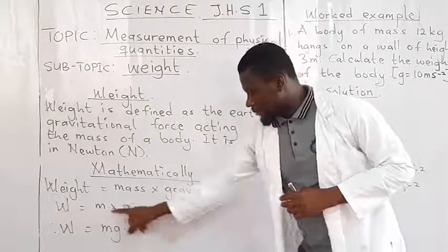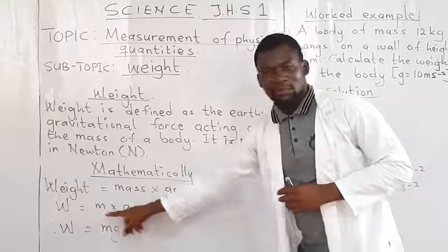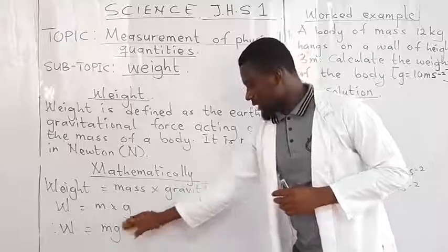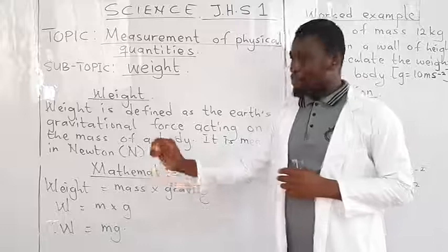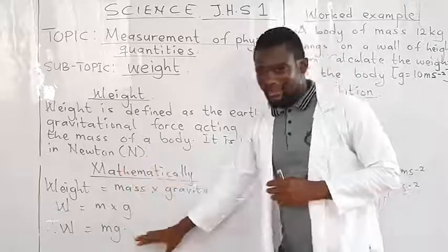In mathematics, any time we have expressions like this, two letters multiplied, what do we get? Let's say MG. Or A times B, we say AB. Y times U, we say YU. Something like that.